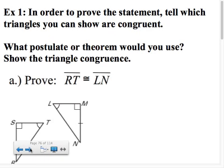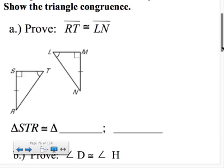Our task here in the first example is to prove that RT is congruent to LN. Without writing a formal proof, the process is very simple: first, prove that your triangles are congruent. Right here, we can see that triangle STR is congruent to triangle MLN.